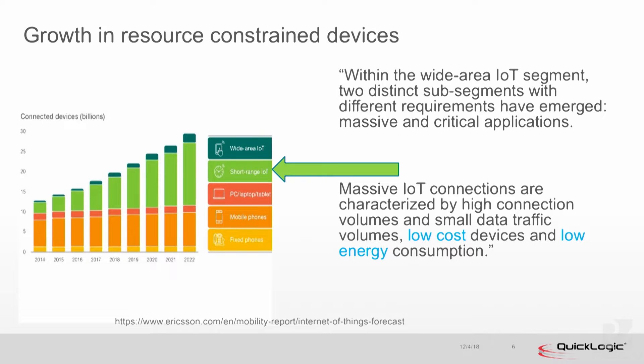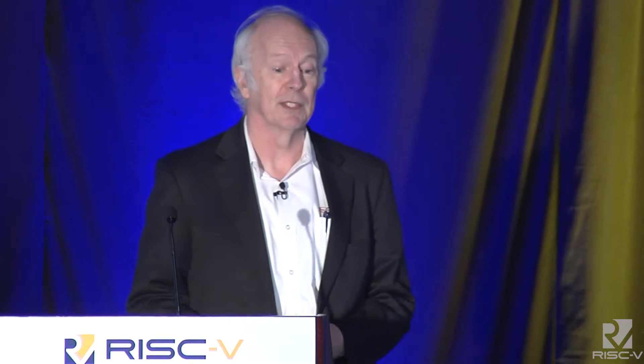The devices that concern me are resource-constrained devices. We see people who want to use two double-A cells to run a sensor for maybe two years, which puts you down in the hundred microamp or hundred microwatt power range. There's expected to be a lot of growth here — people talk about 50 billion sensors, but those won't be $10 or $20 sensors; they'll be down in the dollar range. That means big constraints on area, resources, and power budget, so you need low-cost devices and low energy consumption.